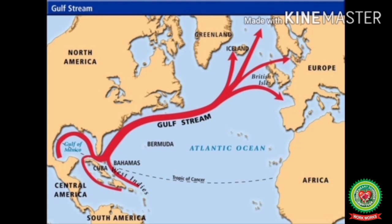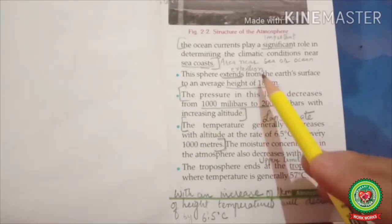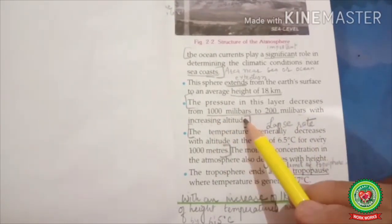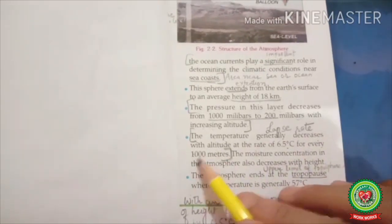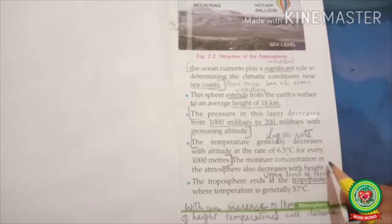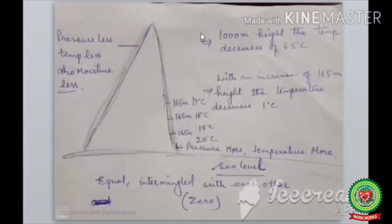Ocean currents driven by surface winds can have a huge impact on climate. For example, North Western Europe, in spite of its latitude, is not a frozen land because the Gulf Stream off the eastern coast of the United States transports warm water to North Western Europe and keeps Europe warm in winter. This layer extends from the earth's surface to an average height of 18 km. The temperature generally decreases with altitude at the rate of 6.5 degrees Celsius for every 1000 meters.